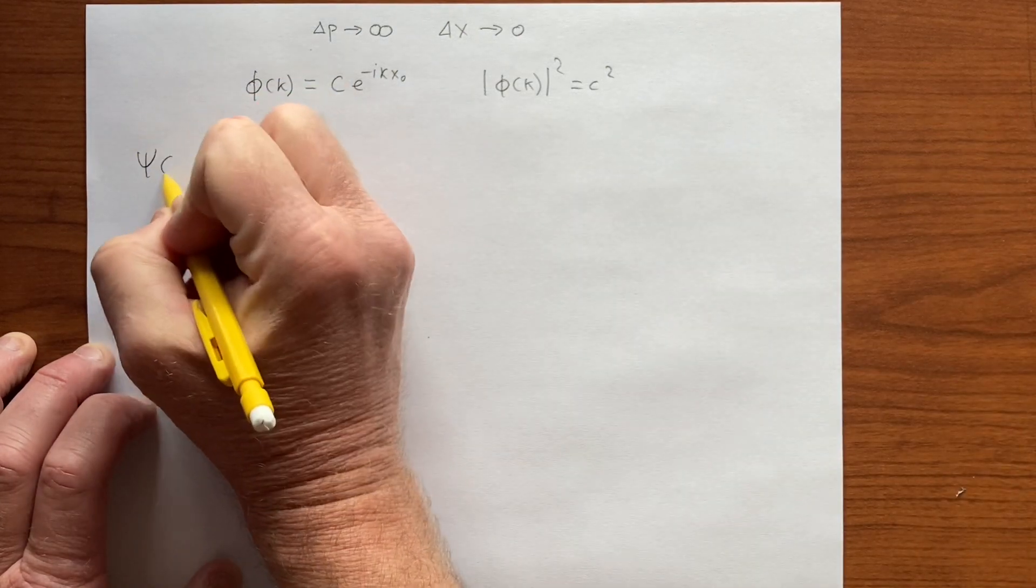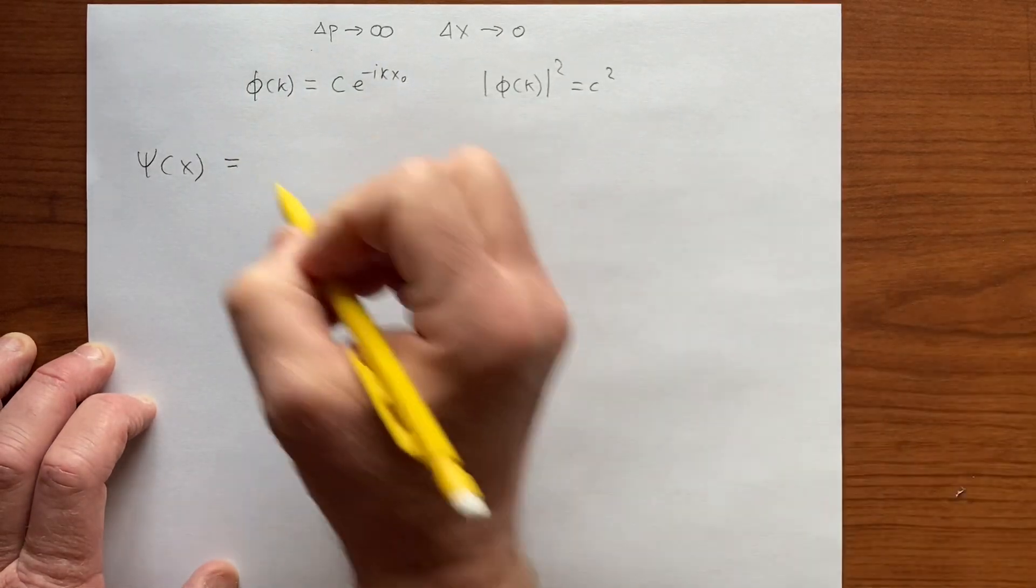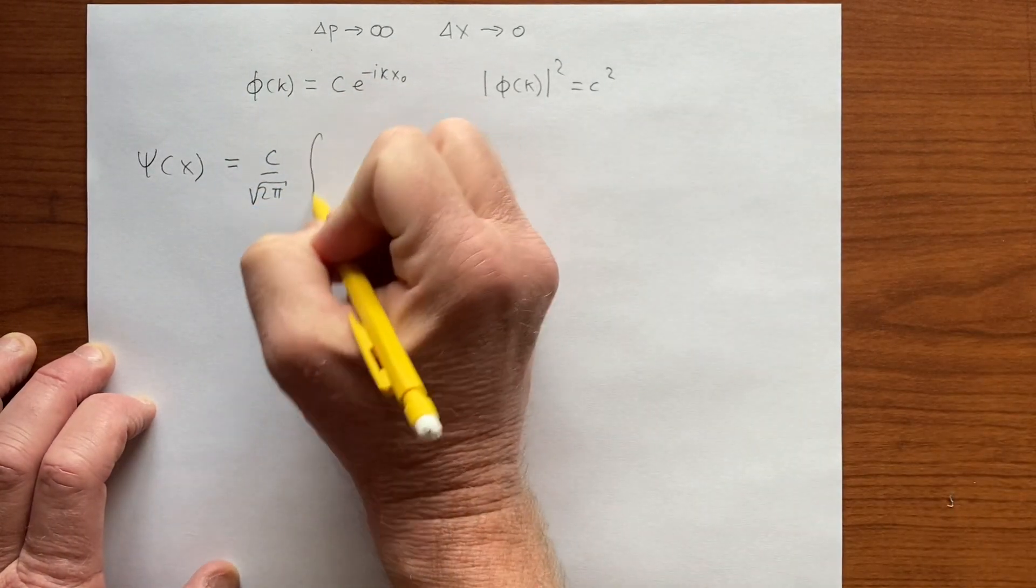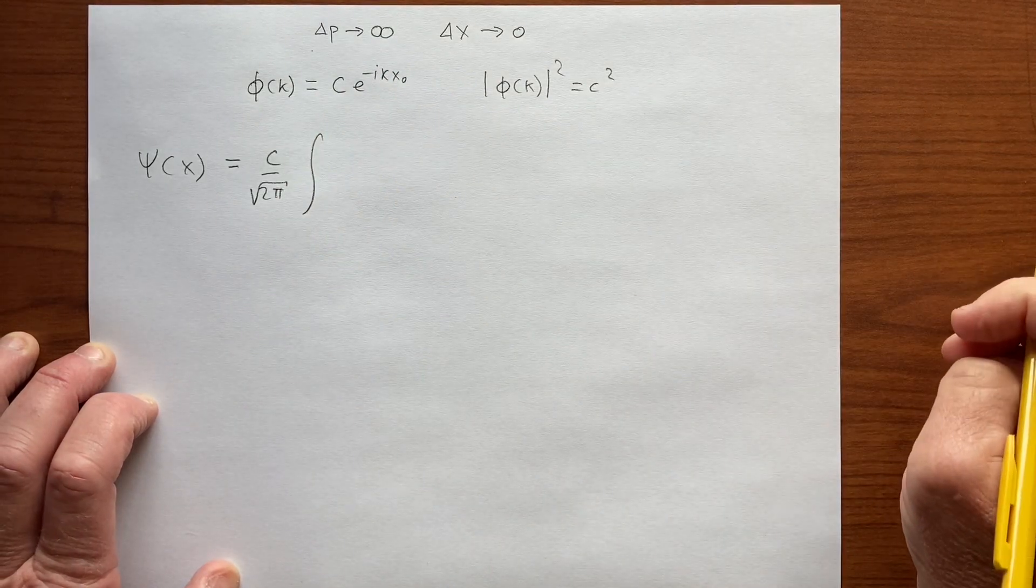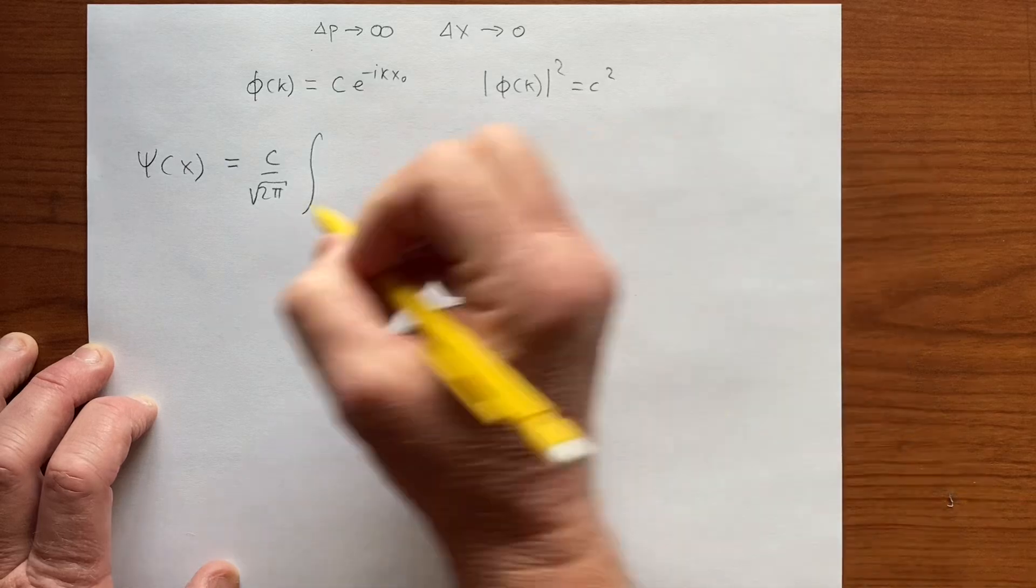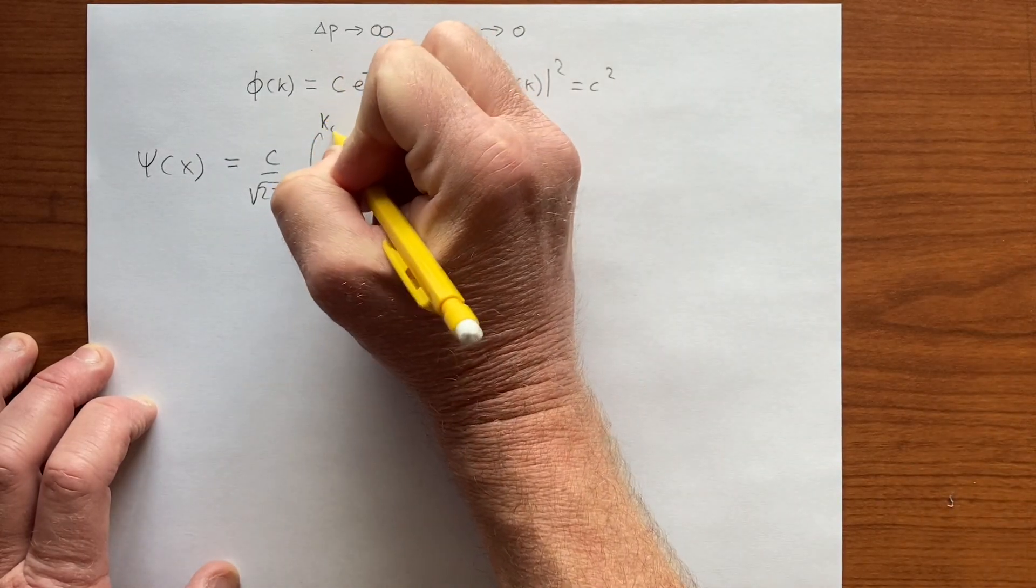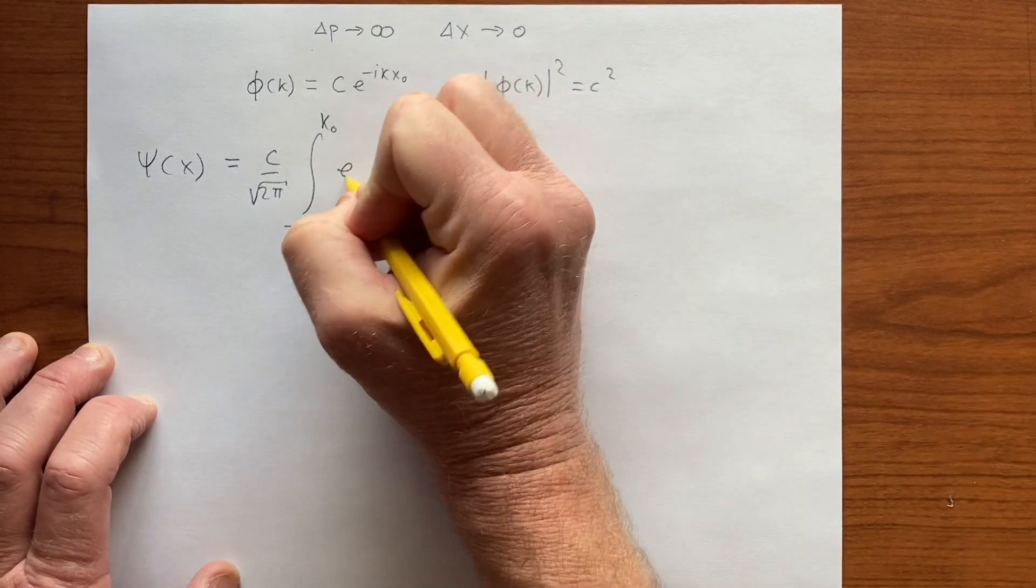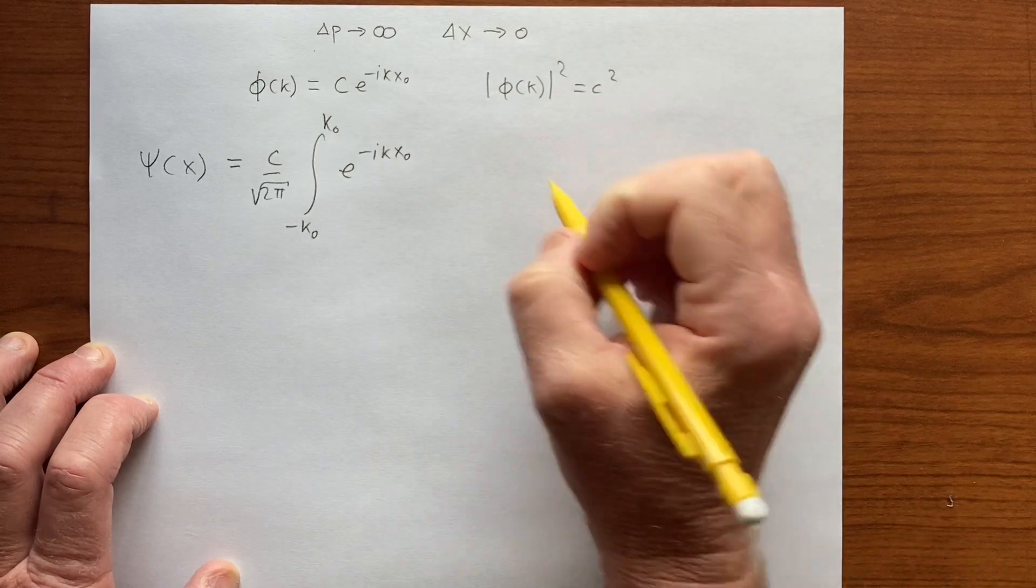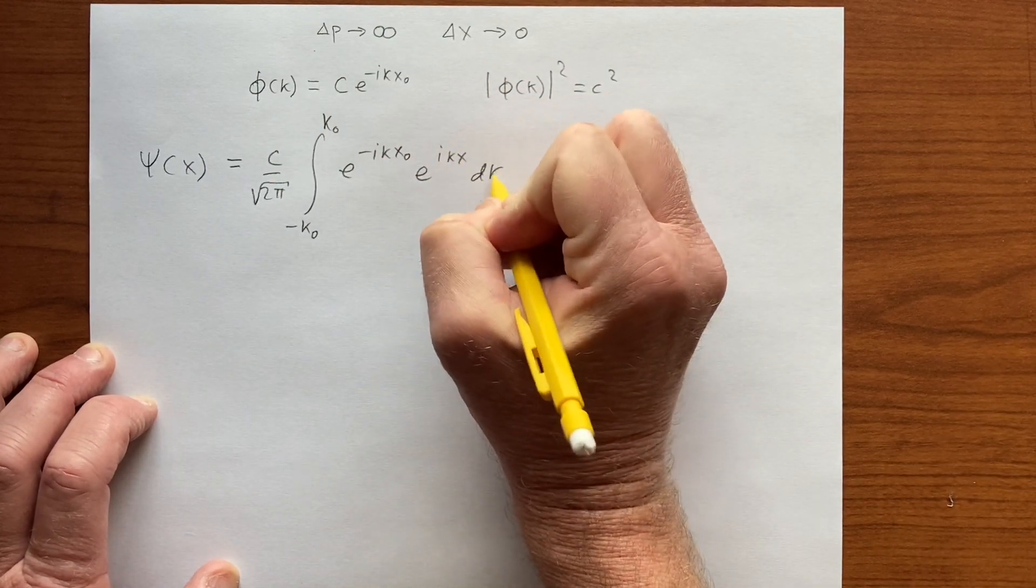The wave function psi of x equals c over square root of 2π, integral from negative k₀ to k₀ of e to the negative ikx₀ times e to the ikx dk.